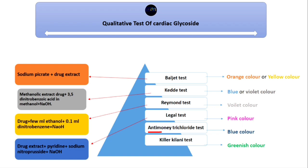In the next test, we take the drug extract plus Antimony Trichloride reagent, which shows a blue color. In the last test, we take the drug extract plus Keller-Kiliani reagent, which shows a greenish color — that is the Keller-Kiliani test.